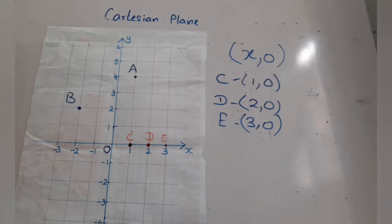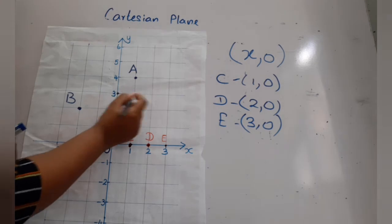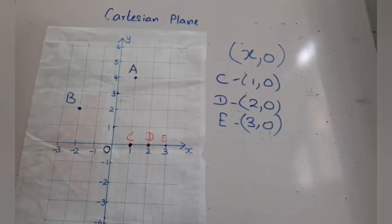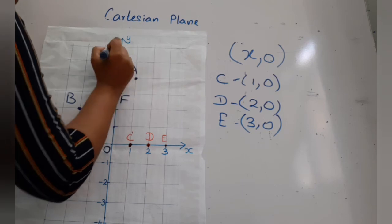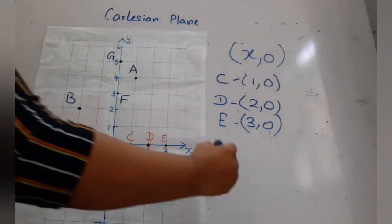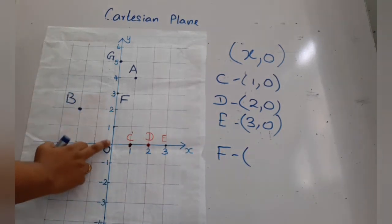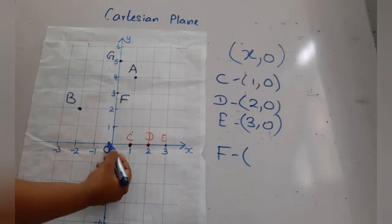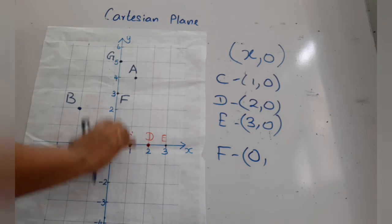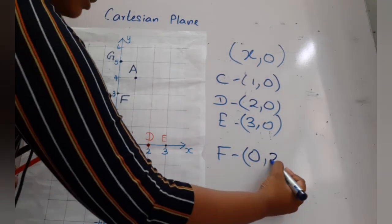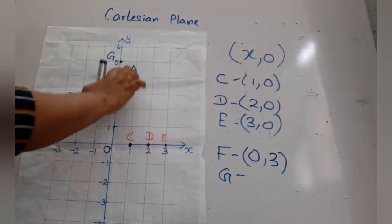Similarly, I'll mark a few points on the y-axis — let's call them F and G. For point F, you first check the x-axis value, which is zero, and the y-axis value is three, so F is (0, 3). For G it is (0, 5).